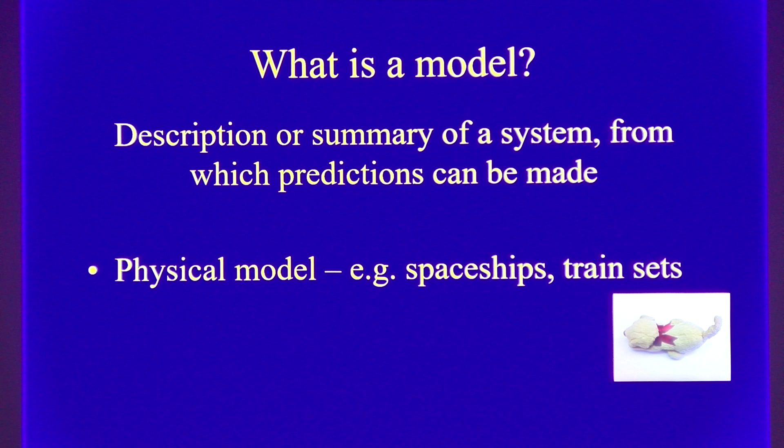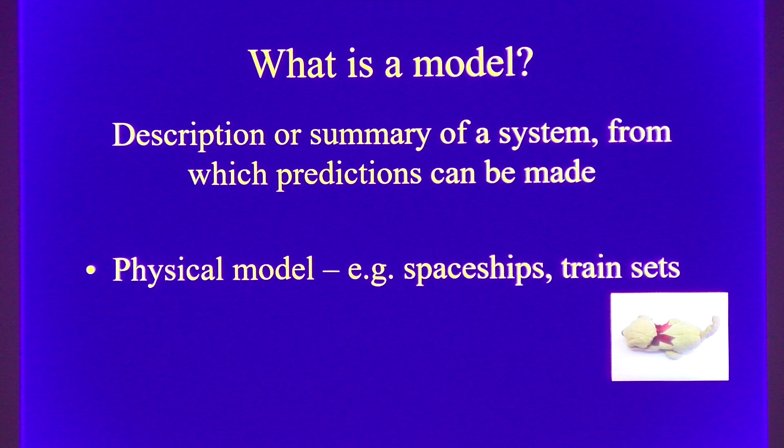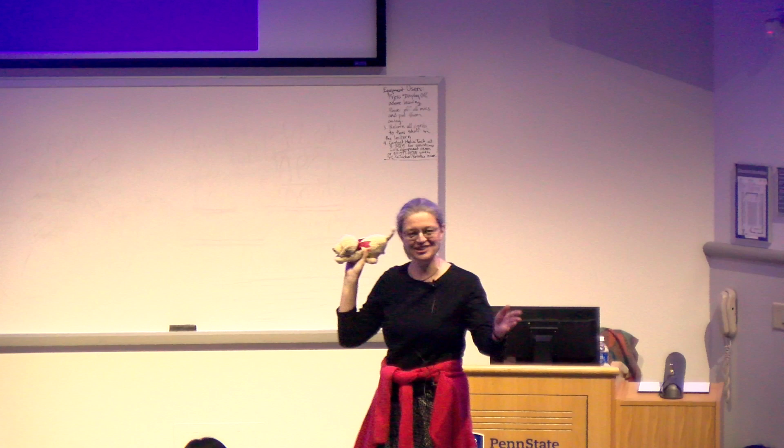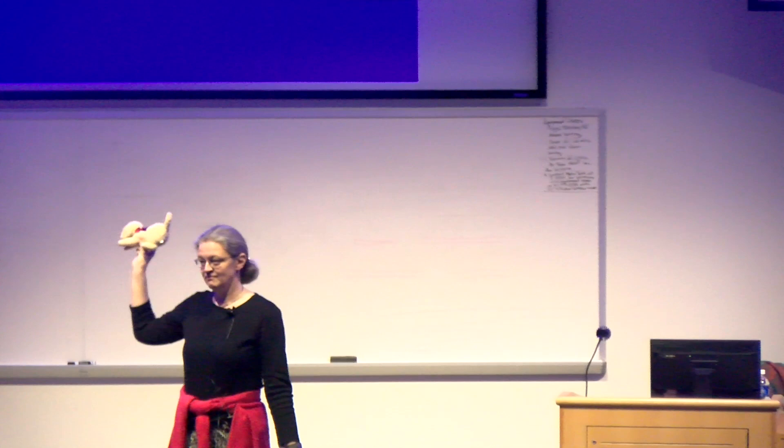I'm going to show you a model of an animal and give you three choices. Is this a model giraffe? Is this a model whale? Who thinks this is a dog? Good job, everyone. Now what would make it more like a dog? It is wagging its tail. It is barking. So not only does it look like a dog, but it also behaves like a dog. This is a model dog that describes the system and also some behaviour of the system.